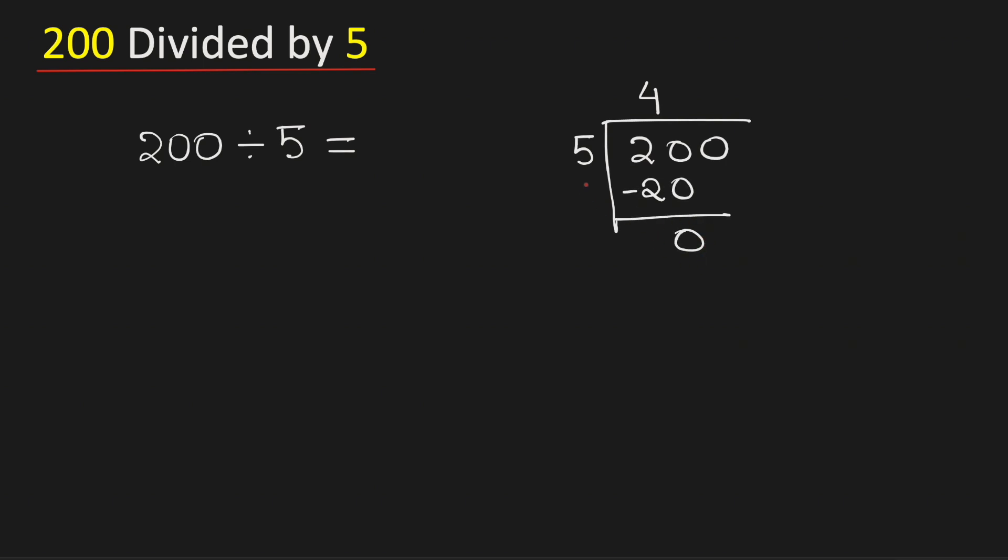As 0 is less than 5, that is why we will bring down this number 0 here. See that this is still 0, so we can remove one 0.